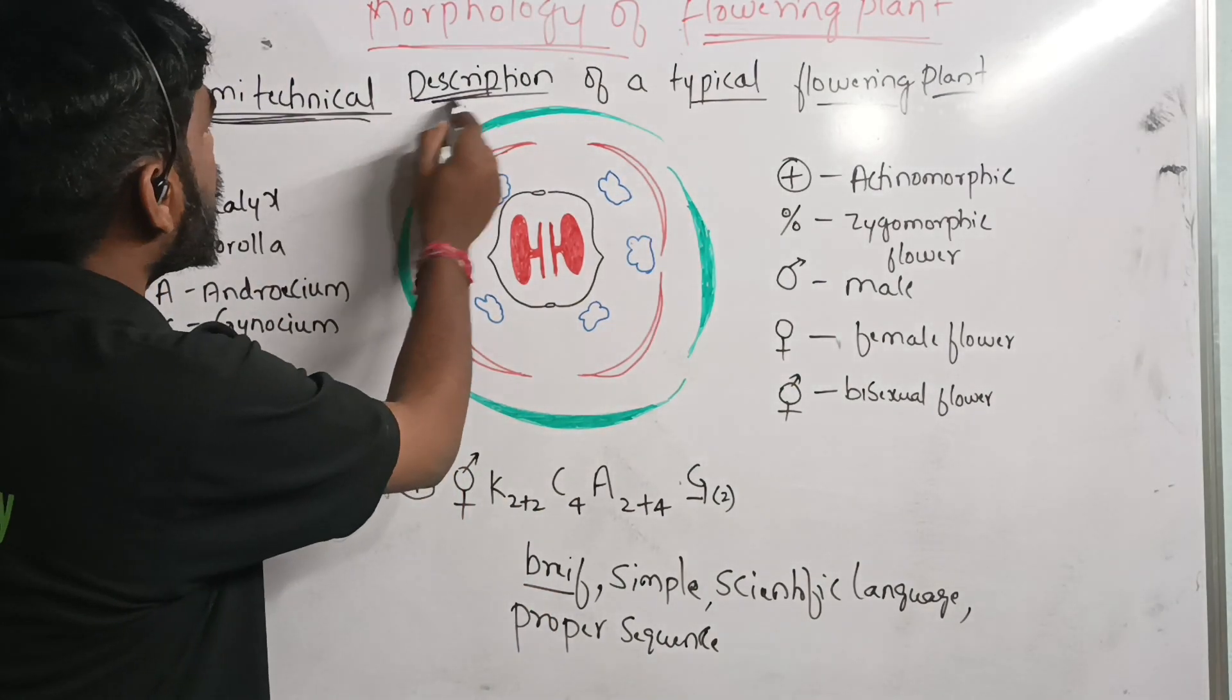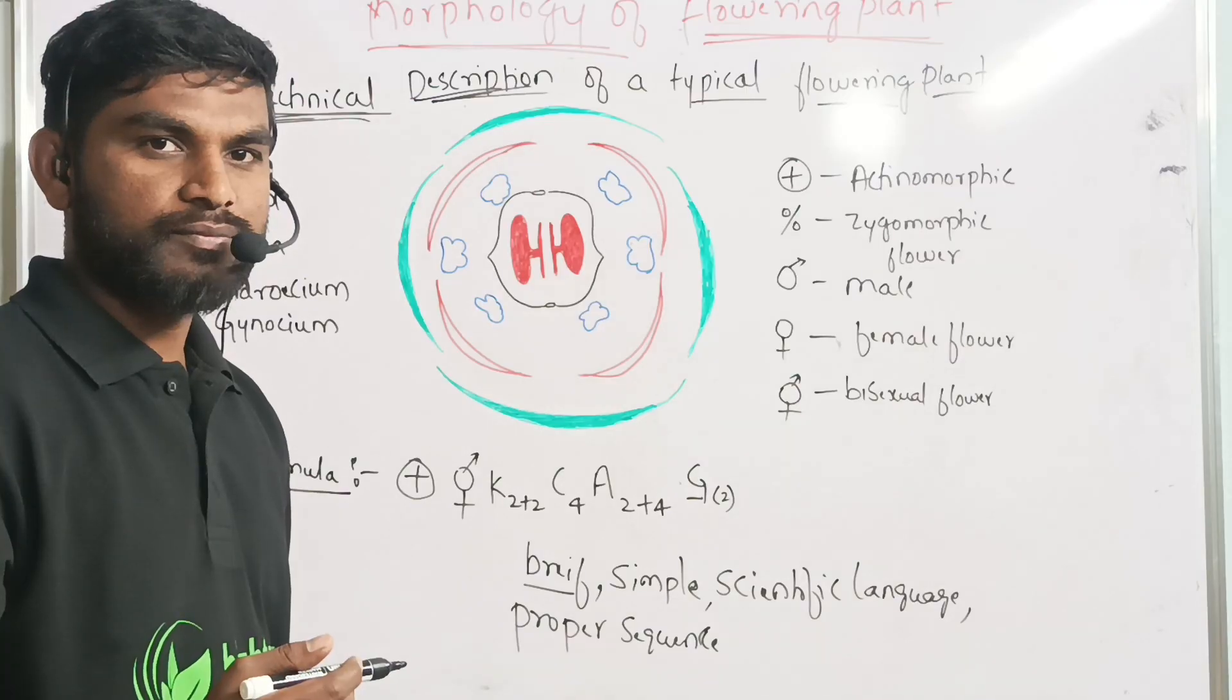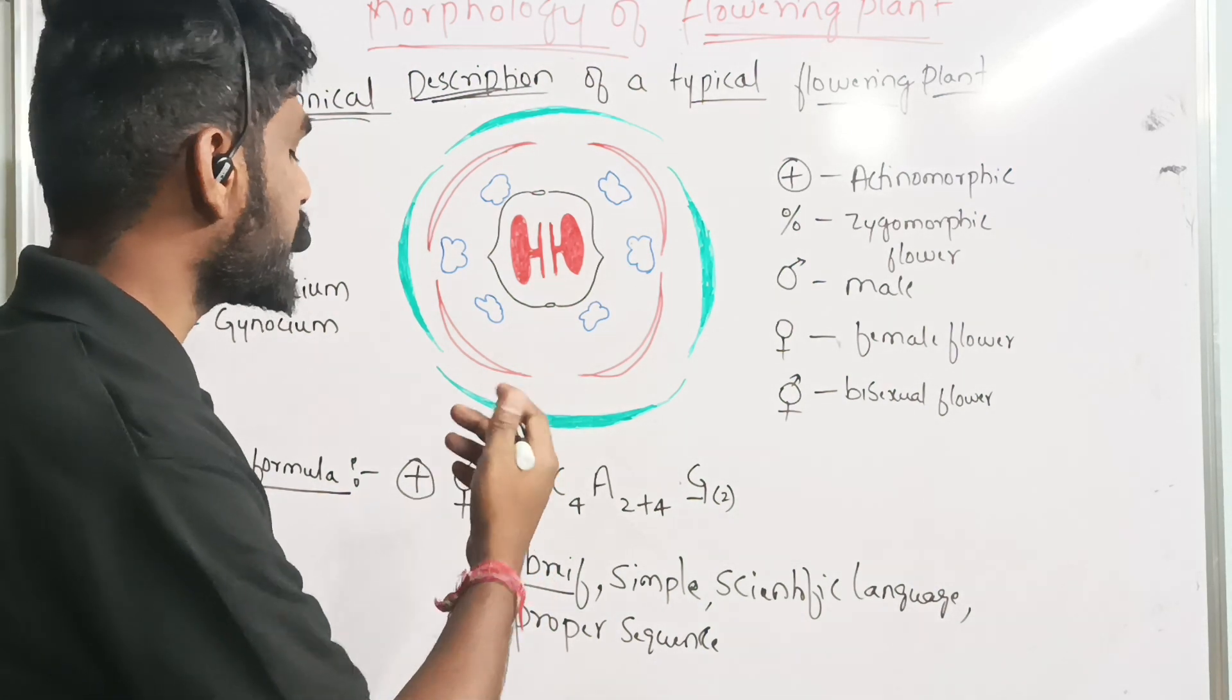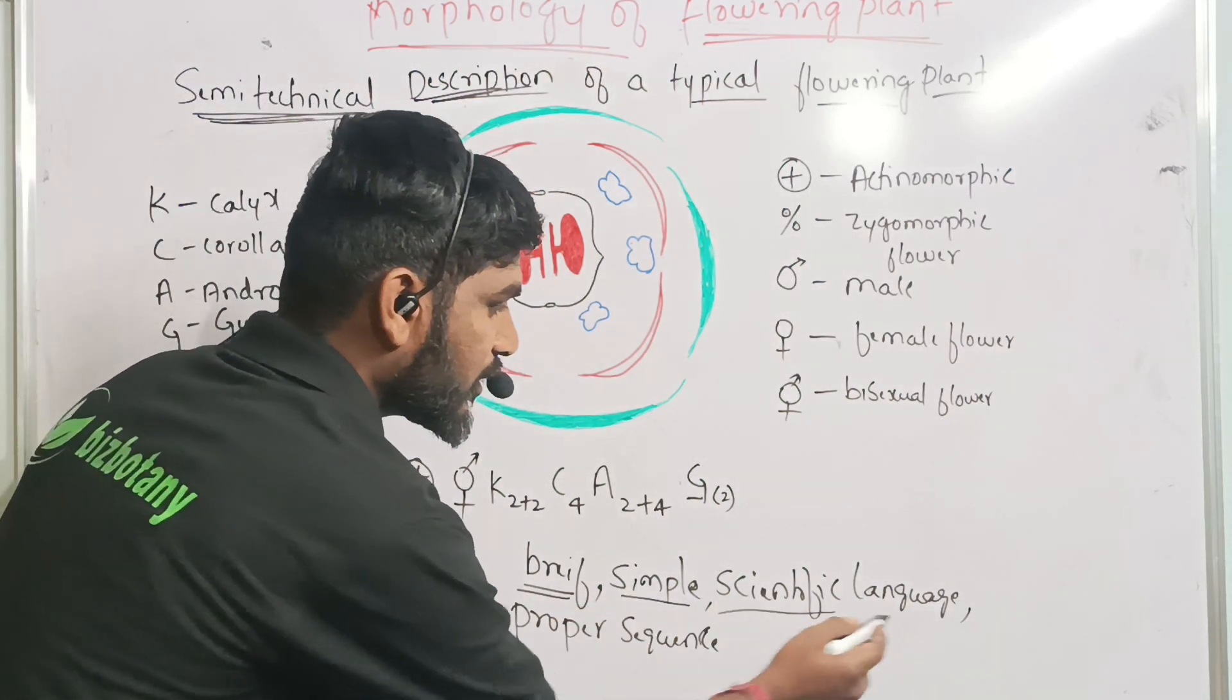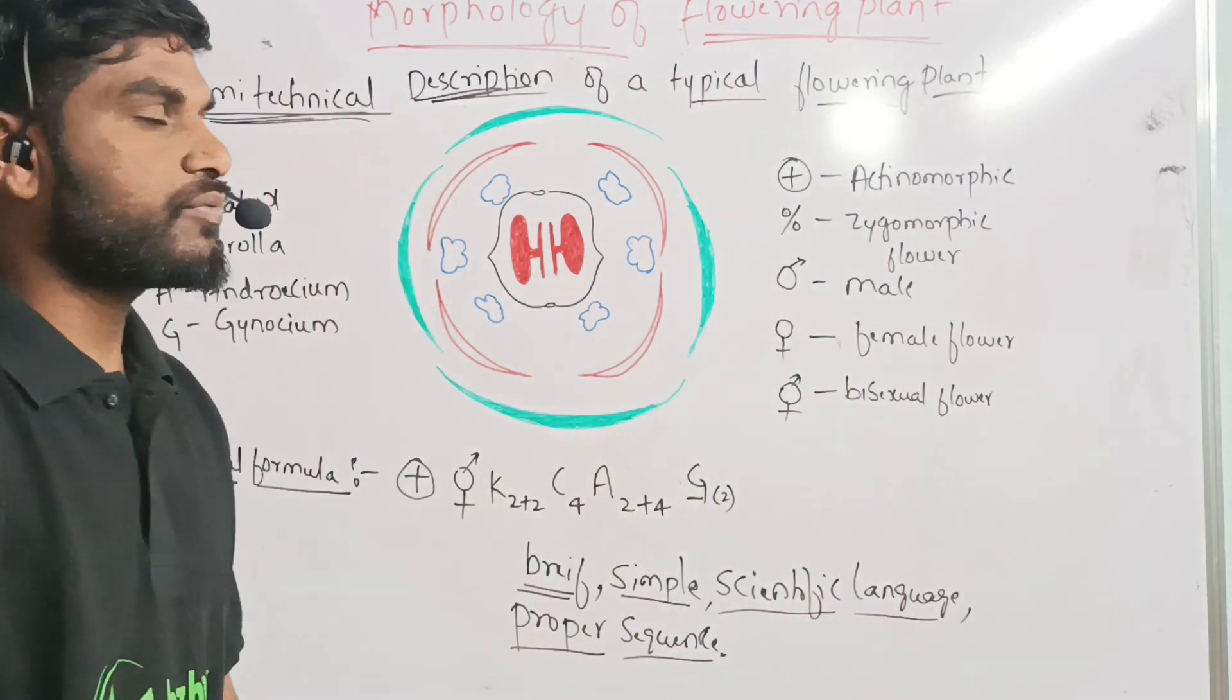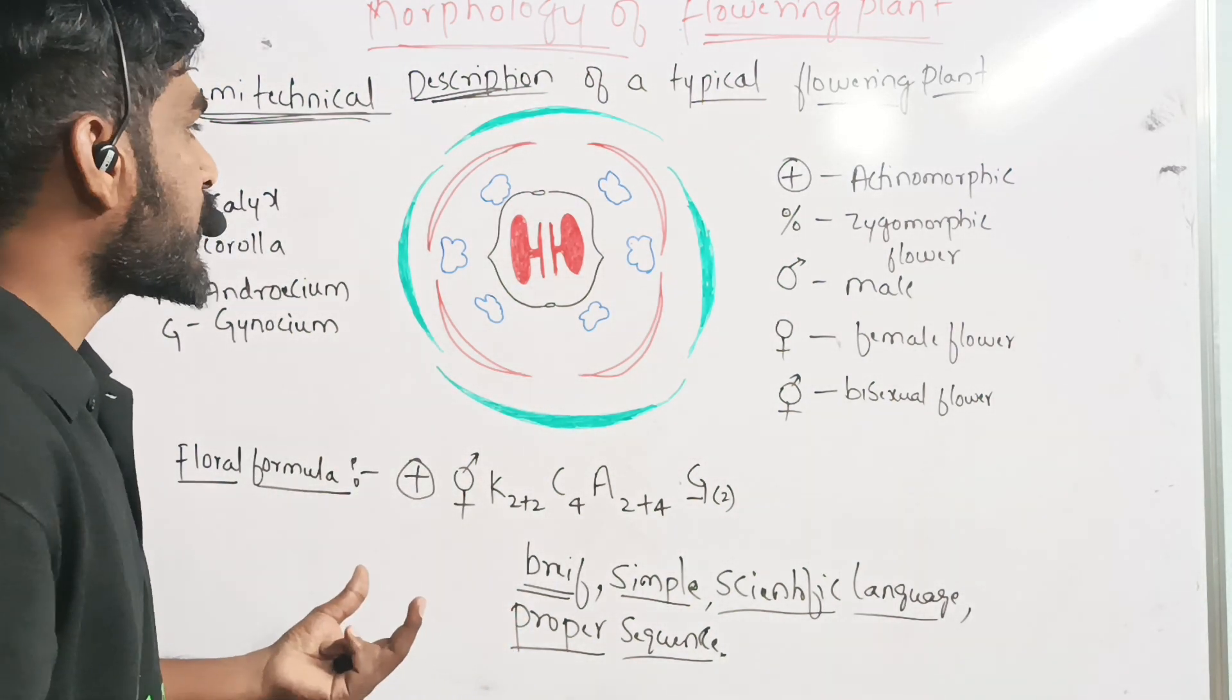Today we will study semi-technical description of typical flowering plants. Flowering plants are described on the basis of the morphology of the plants. But for a brief, simple, scientific language as well as it is sequenced in a proper sequence, hence we utilize the floral formula and floral diagram for the description of flowers.